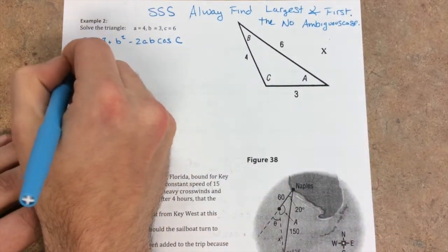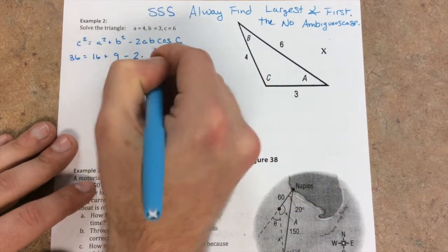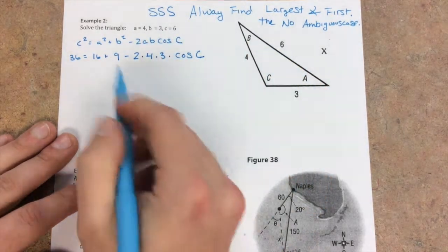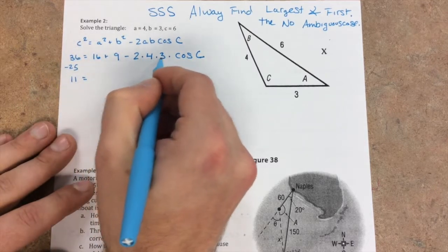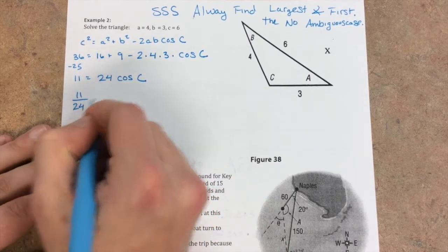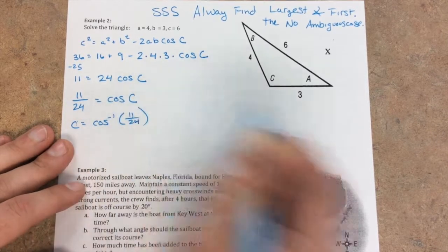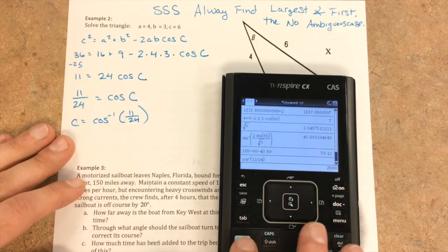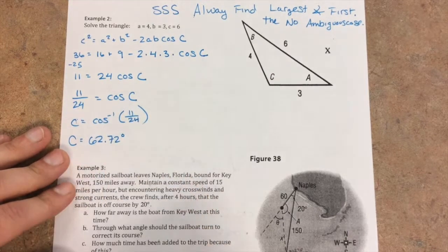C squared is 6, so 36, equals a squared is 16, b squared is 9, minus 2 times 4 times 3 times cosine of c. Now it's just some simple math. 16 plus 9 is 25, minus 25 here. We get 11 equals negative 24 cosine c. Then I'm going to divide both sides by 24. 11 over 24 equals cosine c. C equals inverse cosine of 11 over 24. Inverse cosine of 11 over 24, we get 62.72 degrees. C equals 62.72 degrees. That is our largest angle.